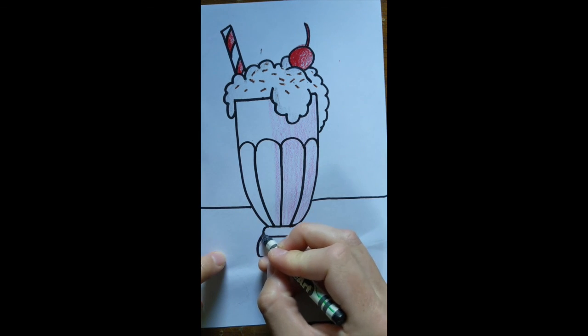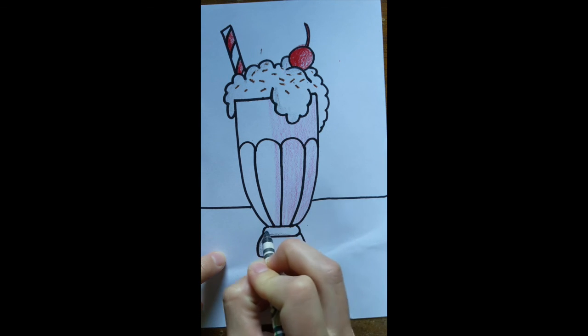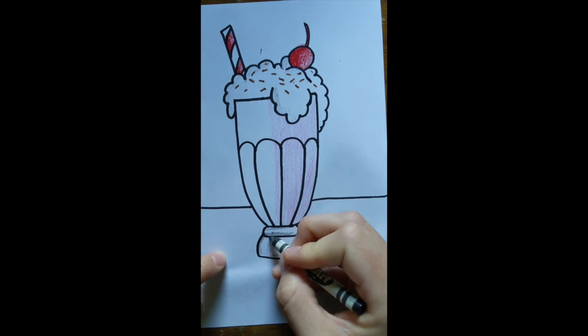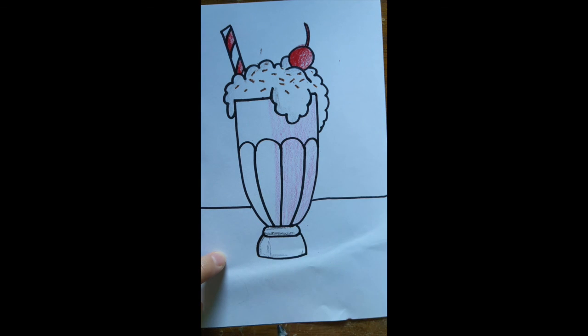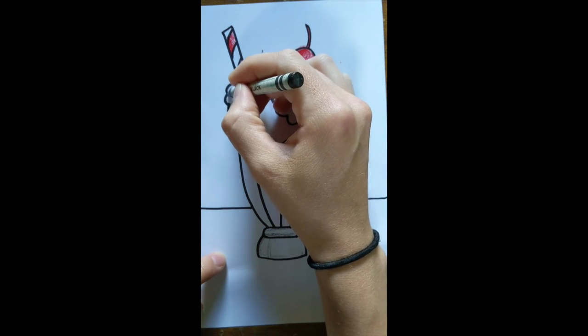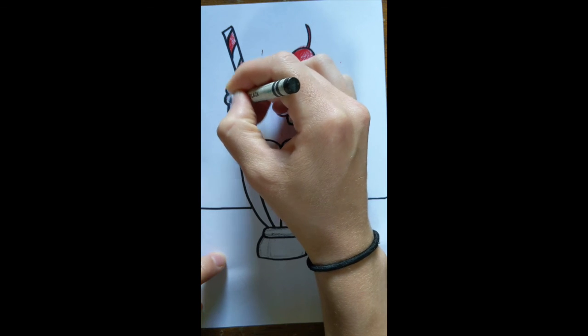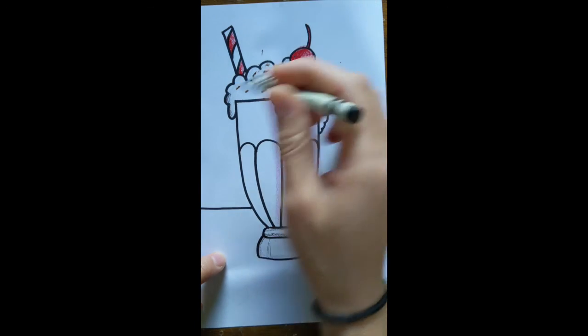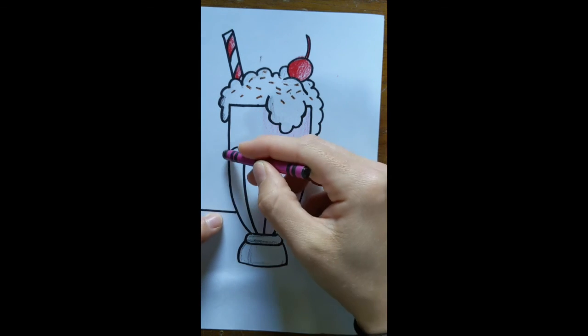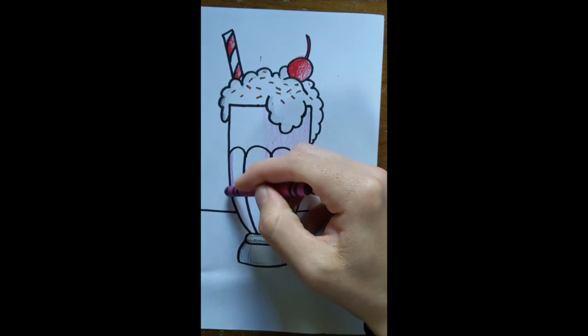So you can start to add that with maybe a black crayon or something else you have lying around. And I'm going to add a shadow on the left side of my glass by using a darker shade of pink. Or it's like a purple-y color to show where it's a little bit darker on the left side.